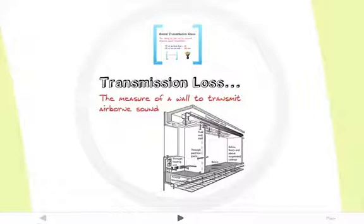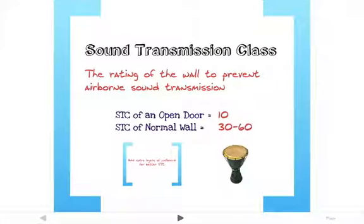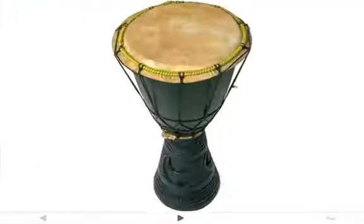Transmission loss is basically the measure of a building material or construction assembly to transmit airborne sound — it tells you the sound insulating ability of a wall. The sound transmission class, or STC, is the rating of walls to prevent the transmission of airborne sound. The higher the STC rating, the greater the sound isolation value. An open door will have an STC of 10, whereas a normal wall will be between 30 and 60. If you want a value higher than 60, special construction is required. The stiffer the barrier, the more sound will be transmitted — less stiff materials are good sound insulators. Think of a drum head: the tighter the material is pulled, the more sound is transmitted.